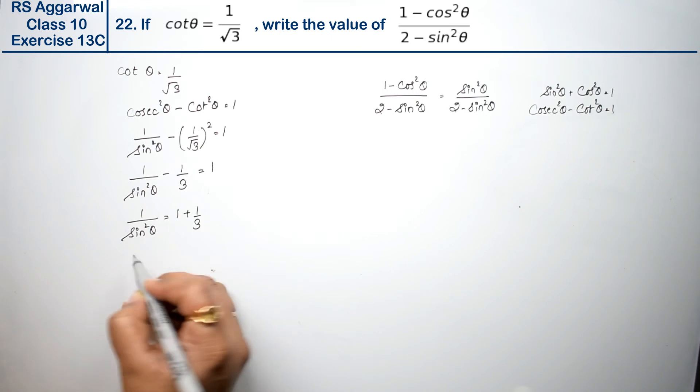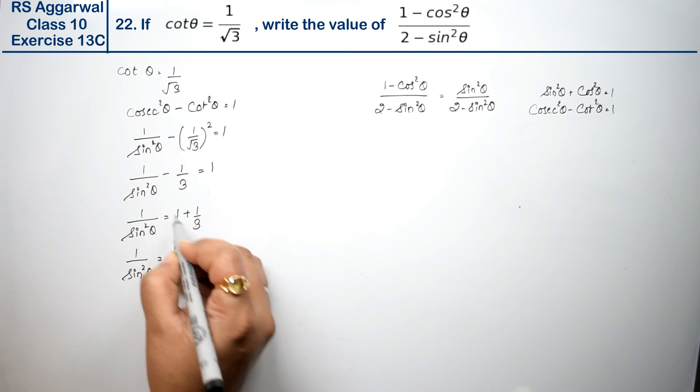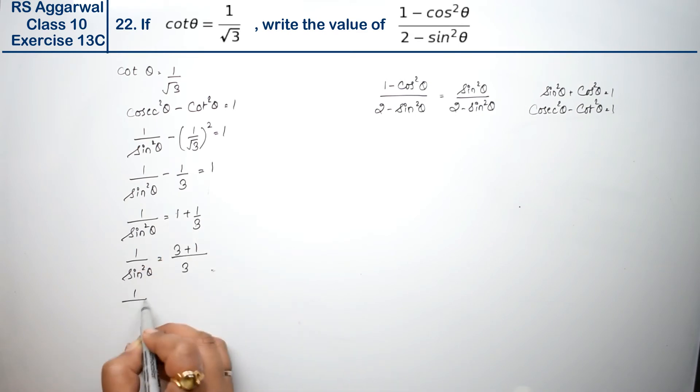So 1/sin²θ = 1 + 1/3. Taking LCM, this becomes (3 + 1)/3 = 4/3. Therefore 1/sin²θ = 4/3.